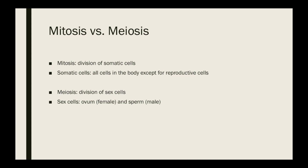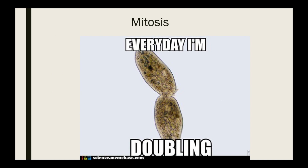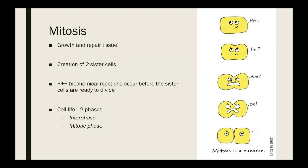Meiosis is the division of sex cells, and of course sex cells, or reproductive cells, are the ovum for the female and the sperm for the male. But this lecture, we're going to talk about mitosis — and I thank the internet greatly for all the wonderful memes out there about mitosis. The main purpose of mitosis is for growth and to repair tissue.